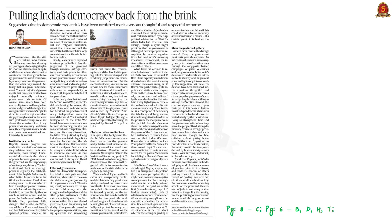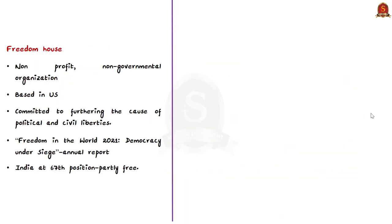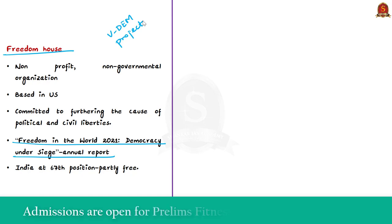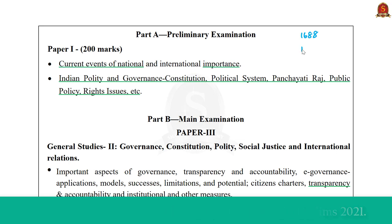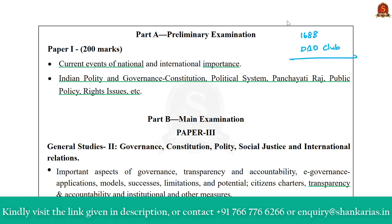Let's move on to the analysis of the first news article. This editorial has stemmed from the recent news about India's democratic stature being downgraded by two international reports. One report is by Freedom House called the Freedom in the World 2021 report, and the other is a report released by the Varieties of Democracy project, based in Sweden.